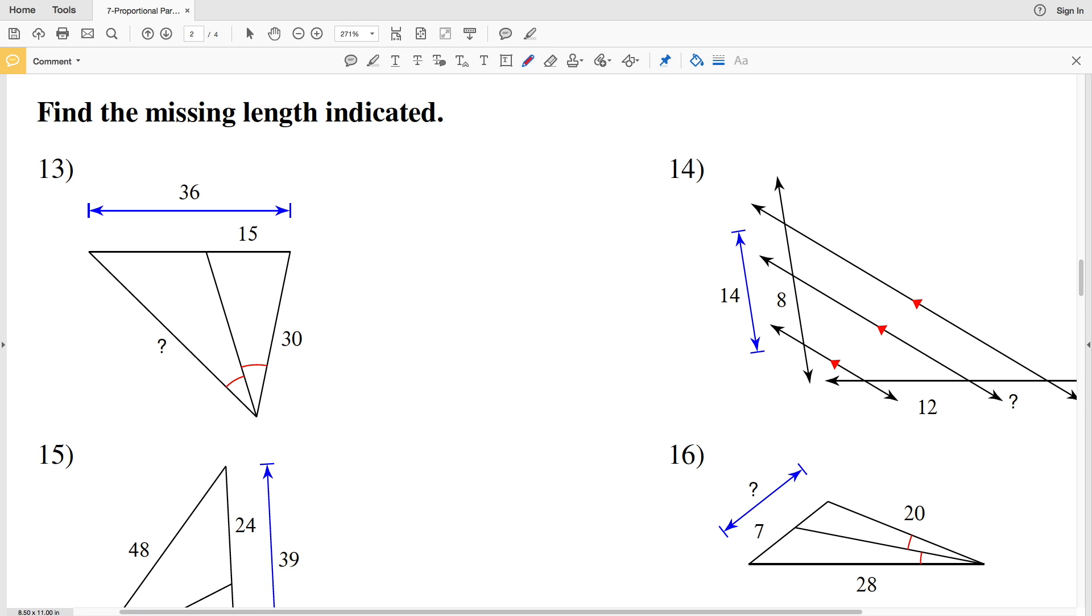In this video we're continuing on with the KUTA Software free worksheet on proportional parts in triangles and parallel lines. You can find this within the geometry section by following the link that I'll leave in the description below. Picking up where we left off with number 13, our directions are to find the missing length indicated.